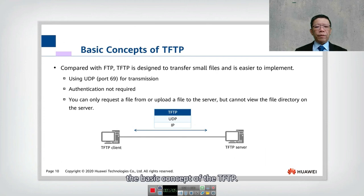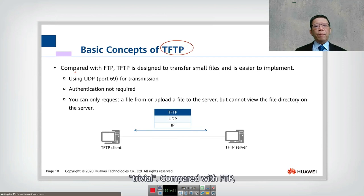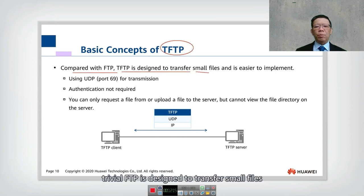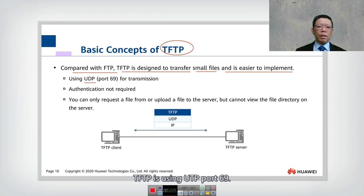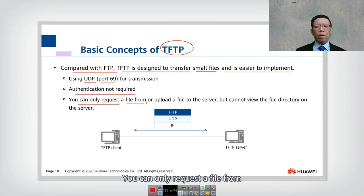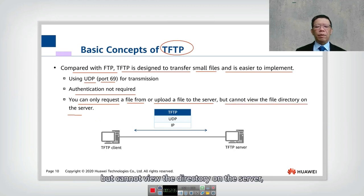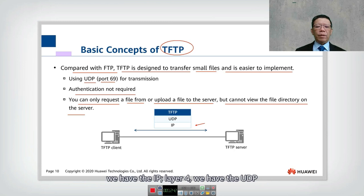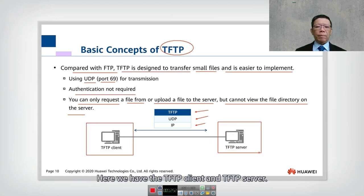Next is TFTP — Trivial File Transfer Protocol. Compared with FTP, TFTP is designed to transfer small files and is easier to implement. Instead of TCP, TFTP uses UDP port 69. There is no authentication required. You can only request or upload a file to the server but cannot view the directory. The protocol stack is: IP at layer 3, UDP at layer 4, and TFTP at the application layer.